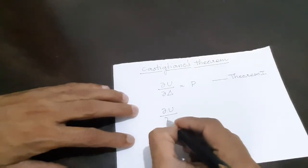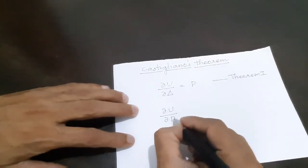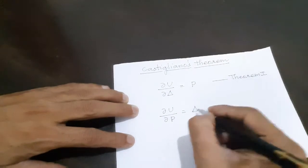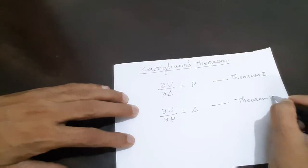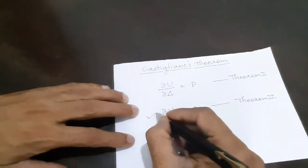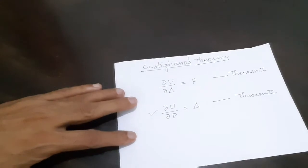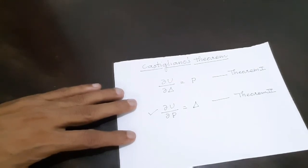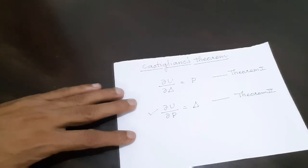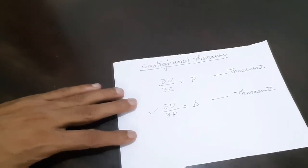And Castigliano's second theorem says: the partial derivative of strain energy with respect to force at any point is equal to deflection at that point. Using Castigliano's second theorem, we are analyzing any structure by the strain energy method. We use this to determine indeterminate reactions, that is, for indeterminate structures.